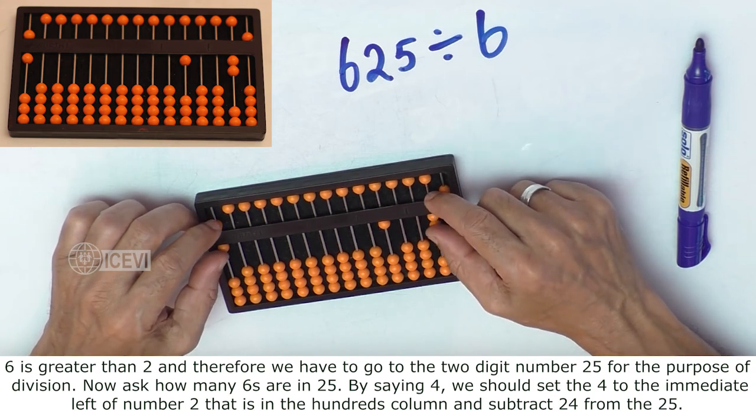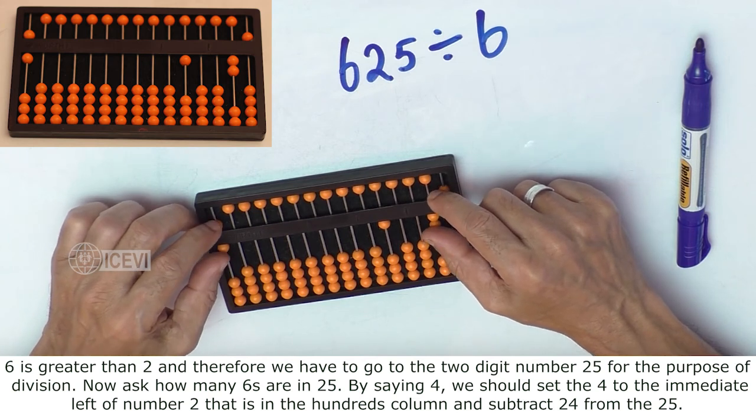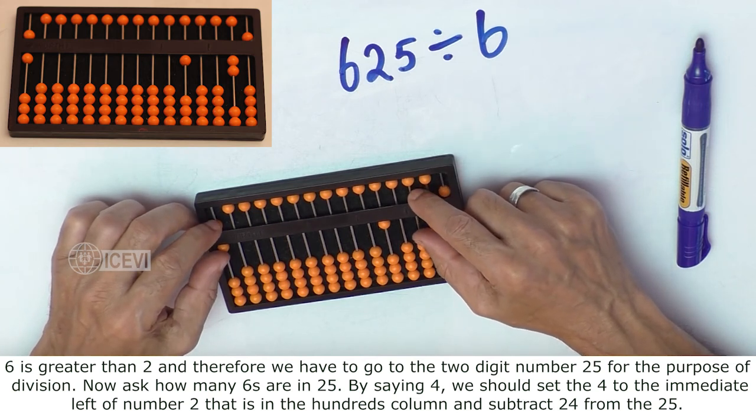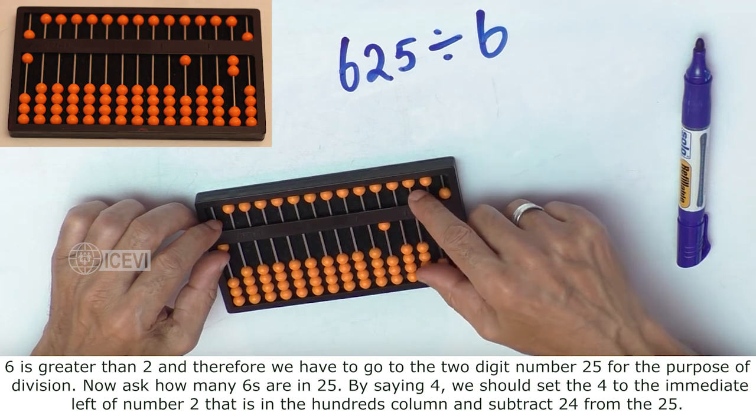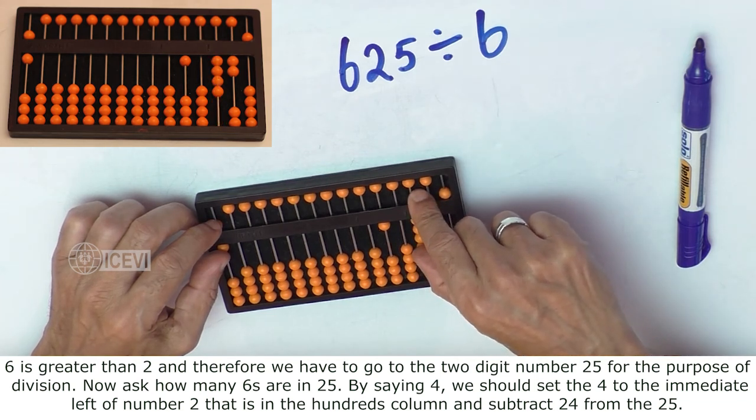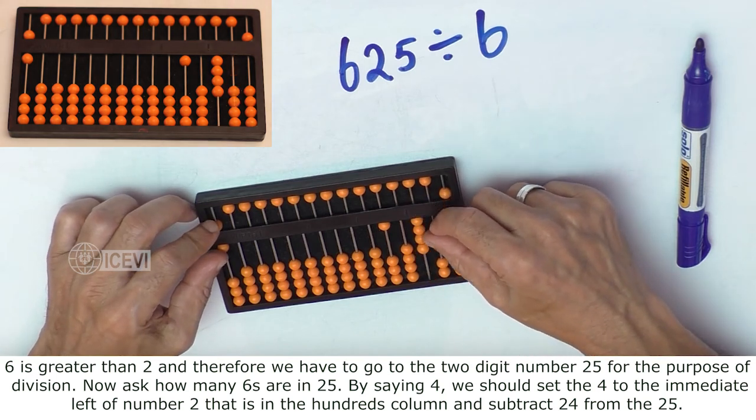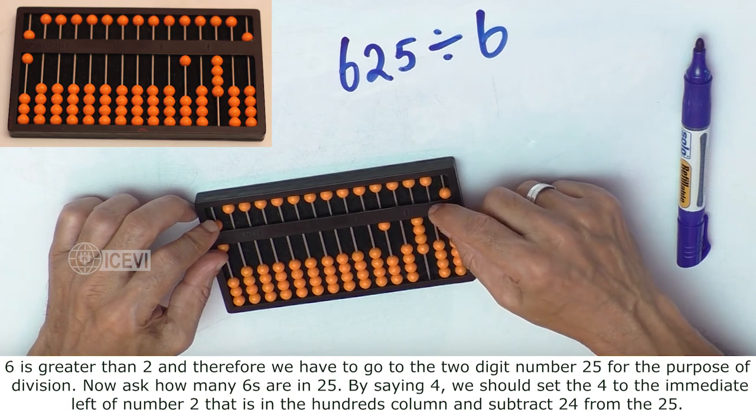Now ask how many 6s in 25 by saying 4. We set the 4 to the immediate left of the number 2, that is in the 100s column, and subtract 24 from 25.